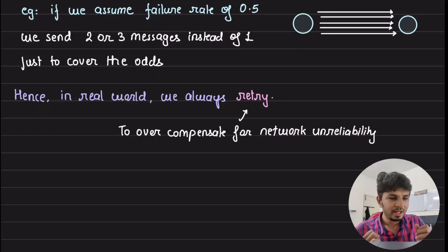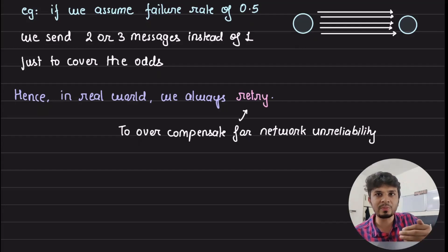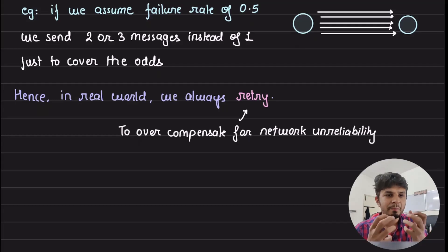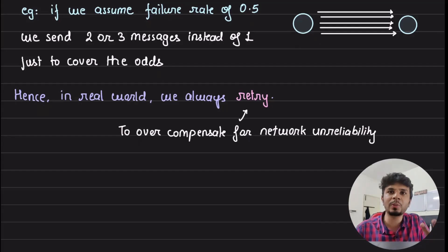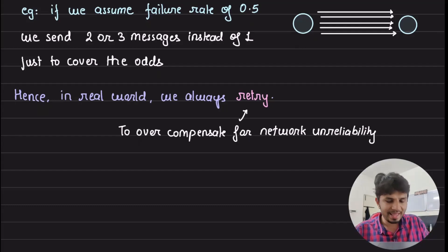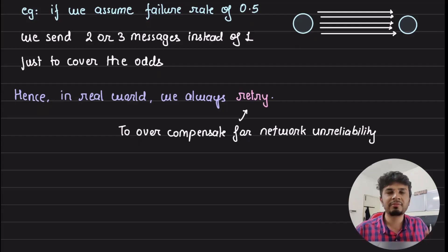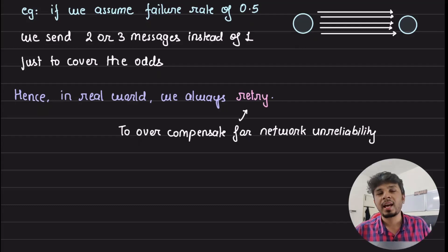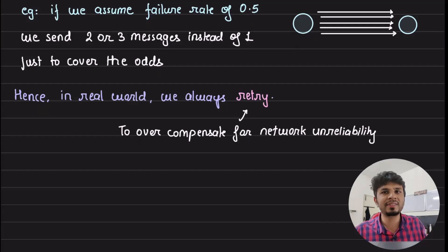That's it for this video. I wanted to cover distributed consensus starting from the fact that it's impossible to attain under full unreliability, and why we apply retries in distributed systems. If you liked this video, give it a thumbs up; if you like the channel, give it a subscribe. I post three in-depth engineering videos every week — see you in the next one, thanks!